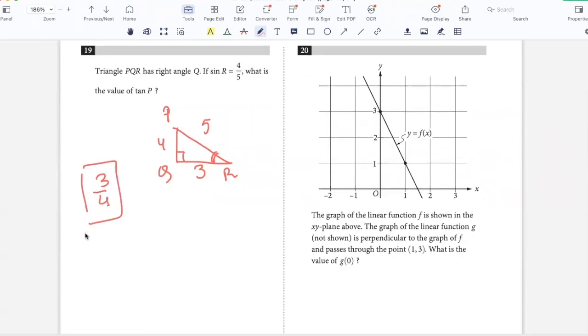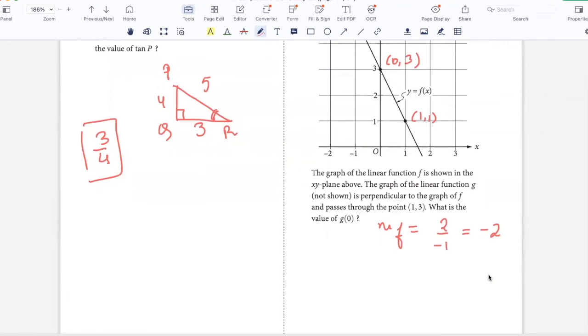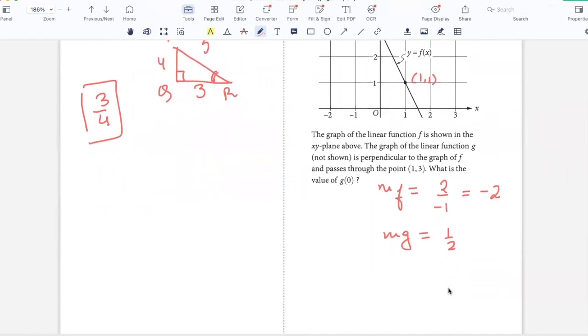The graph of the linear function shown in the XY plane above. The graph of the linear function G not shown is perpendicular to the graph of this and passes through the point 1 comma 3. What is the value of G of 0? Let's first find the slope of F. We can use 0 comma 3 and 1 comma 1. Slope of F will be 3 minus 1, 2 by minus 1, so that's negative 2. Since G is perpendicular to F, the slope of G will be 1 by 2, because the product of the slopes of perpendicular lines is negative 1.